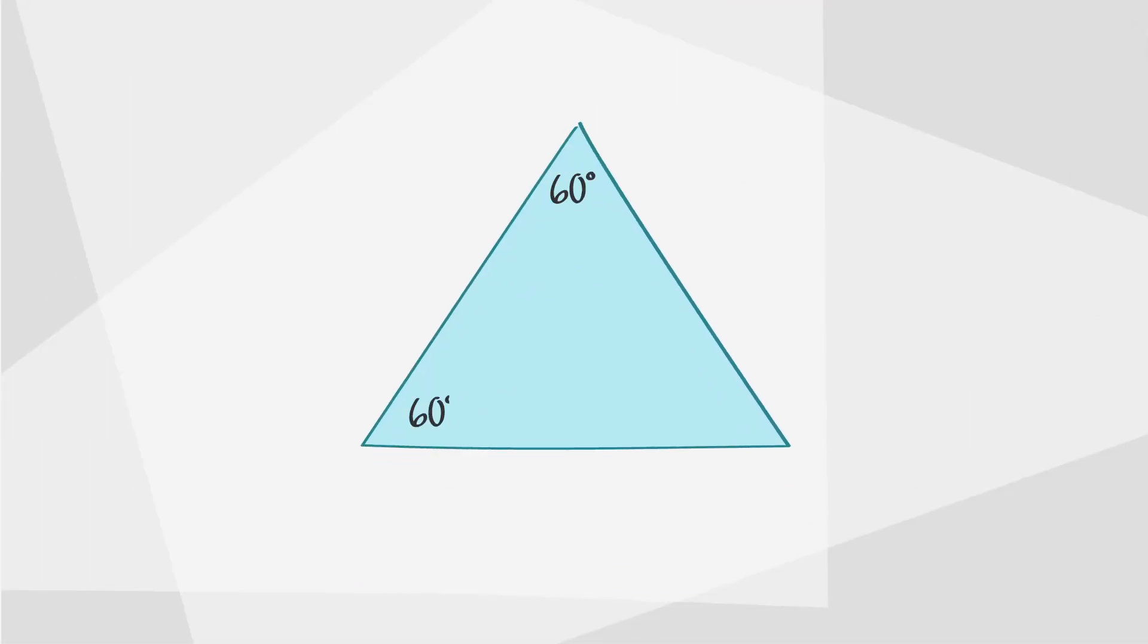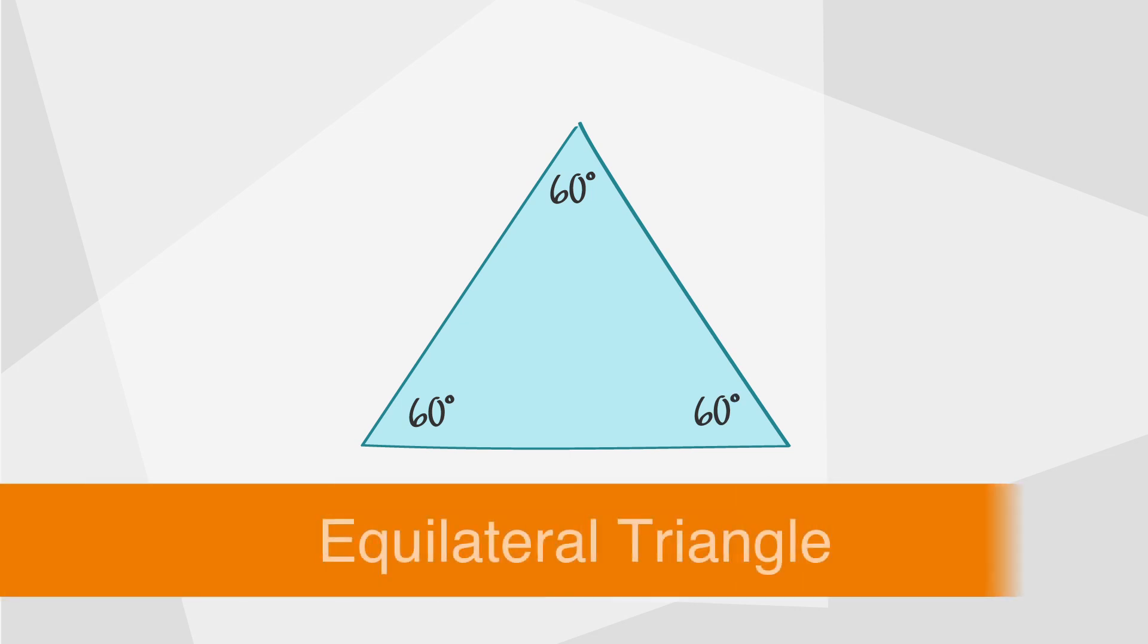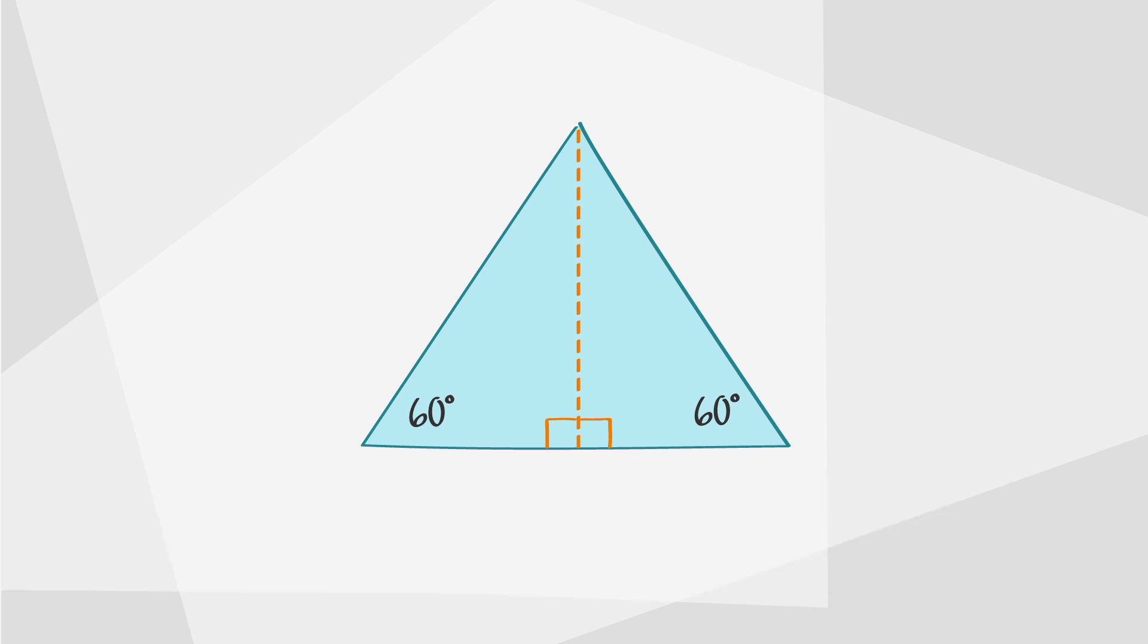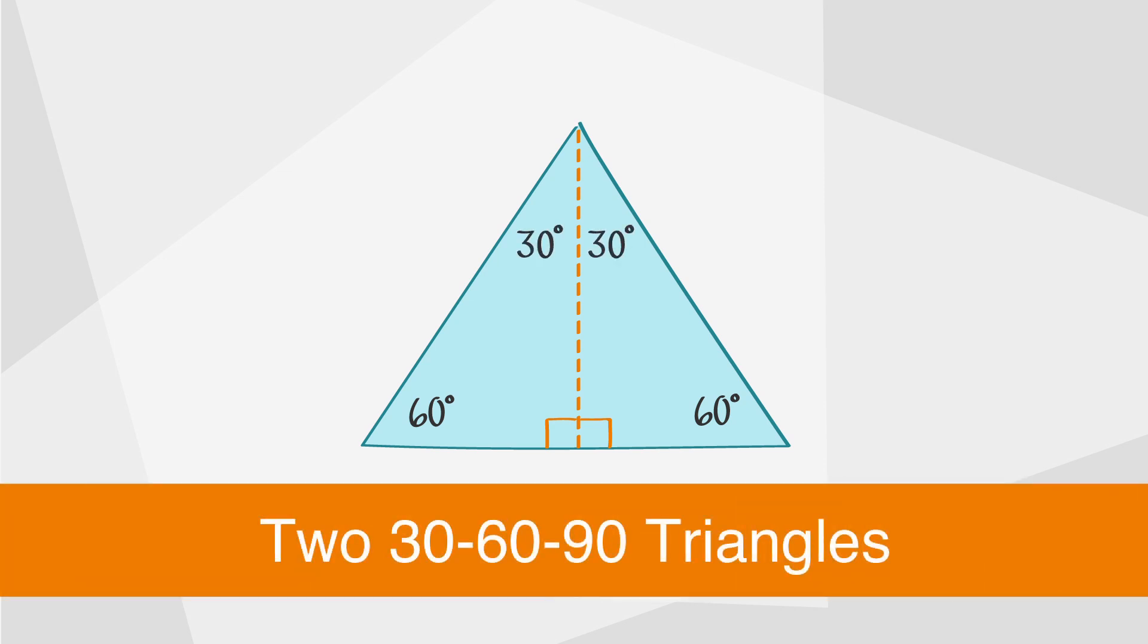Sometimes, the solution to an ACT problem will be found in turning an equilateral triangle into two 30-60-90 triangles by dropping an altitude. Ta-da! Within this equilateral triangle, we have two 30-60-90 triangles.